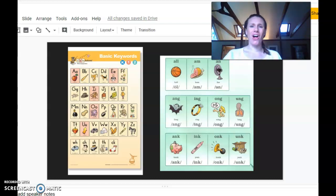The warm-up continues with word family sounds. They practice all (as in ball), am (as in ham), an (as in fan), ang (as in fang), ing (as in ring), ong (as in song), ung (as in lung), and ank (as in bank).